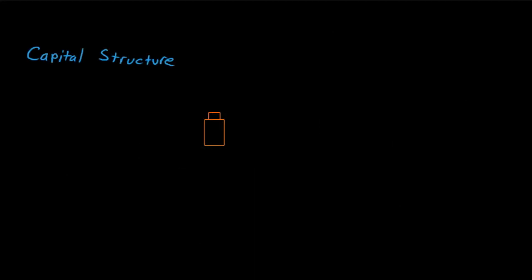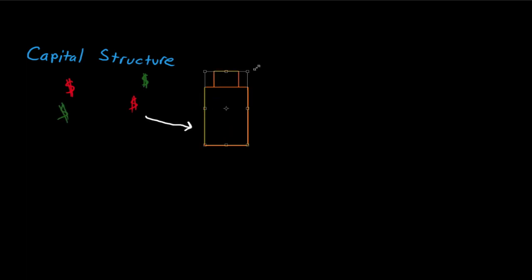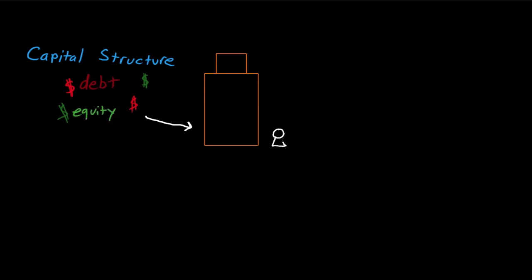What is capital structure? Capital structure is the mix of different types of financing used by a company to fund its operations and growth. Financing often includes a combination of debt and equity. Analysis of a company's capital structure offers insight to the return a company may earn for its shareholders, as well as its ability to weather difficult economic conditions.